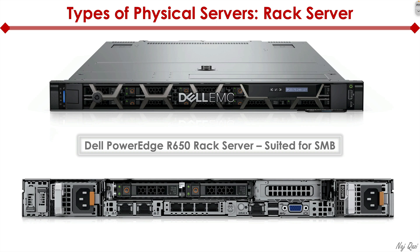It's a 1U form factor — one rack unit. Typically in a data center, we would have a rack that is 42U, which is the height of a typical data center server rack. We take these servers — we also call them pizza boxes — and slide them into that rack. In a 42U rack, we can potentially insert 42 of these servers. Typically though, different sections of the rack are dedicated to different device types: servers at the bottom, and switches at the top of the rack.